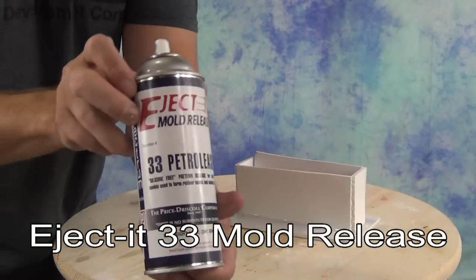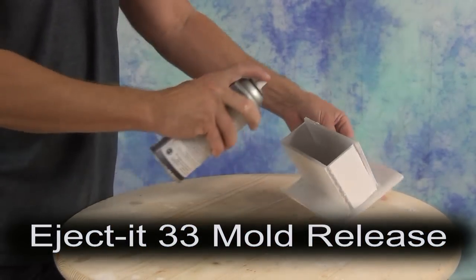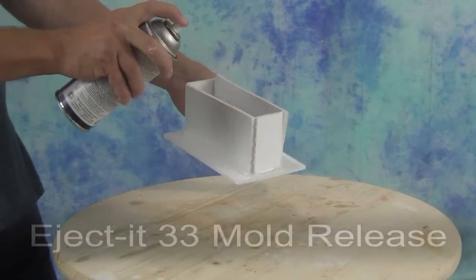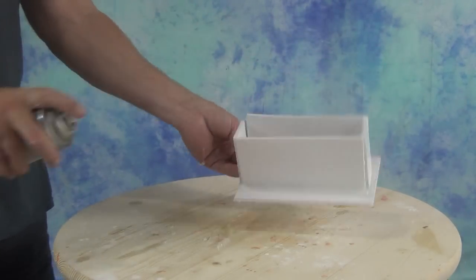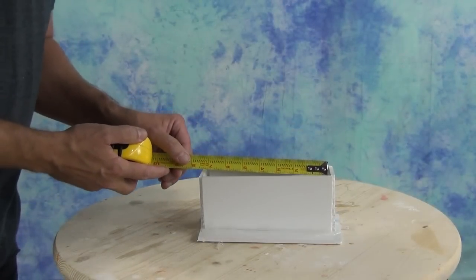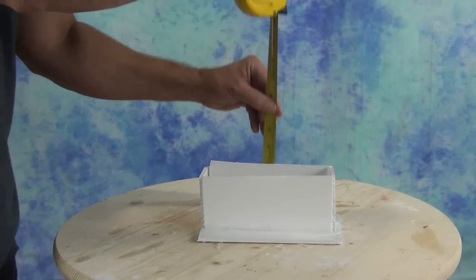To release our pattern, we're going to use some of the Eject-it 33 mold release. Even though with silicone we don't have to use a mold release, it will really help everything come out a lot cleaner, especially to make sure it doesn't stick to that mold box. Now we're ready to calculate the volume on our mold box. One quick way you can do this is by dumping dry rice into the mold box and then pouring that back out and checking that volume.